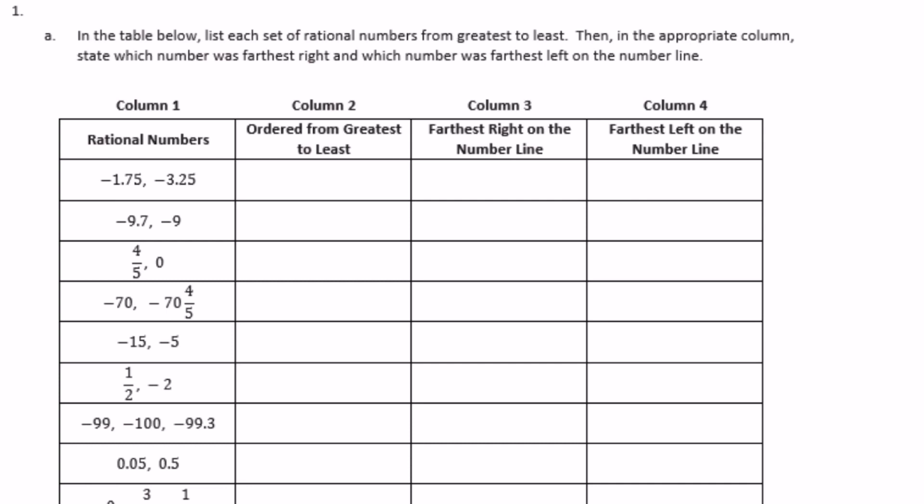6th grade, module 3, lesson 8, problem set. In the table below, list each set of rational numbers from greatest to least. Then in the appropriate column, state which number was furthest to the right and which number was furthest to the left on the number line. So we're ordering from greatest to least — that's important to remember. We're looking for the biggest number first, smallest number second.